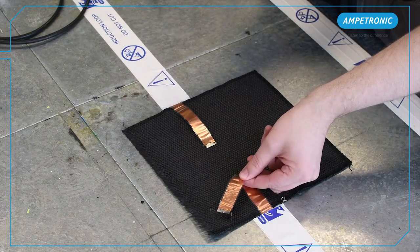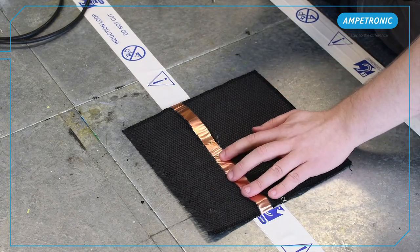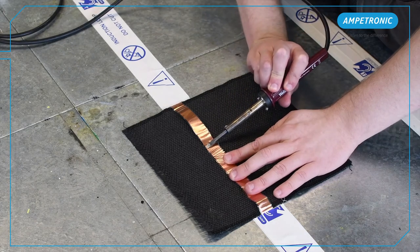Once you have tinned both ends, place them on top of one another, securing down the tapes so that it hasn't got any movement when you're soldering. And then apply heat to the joint.